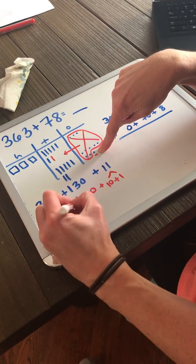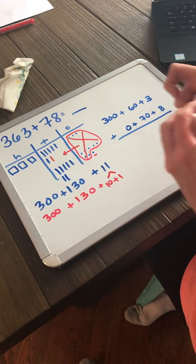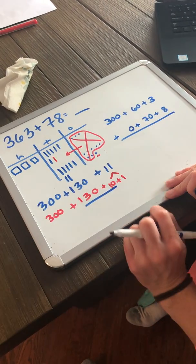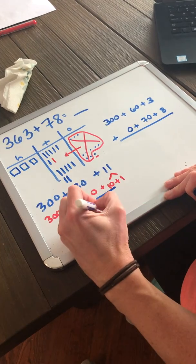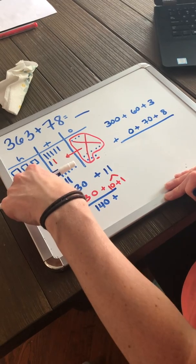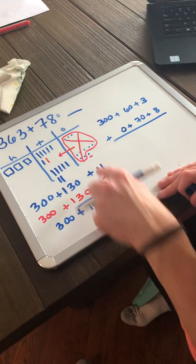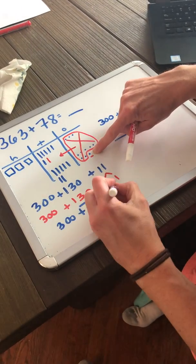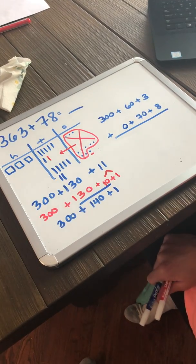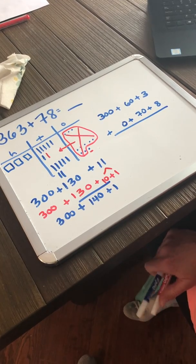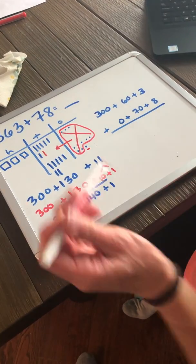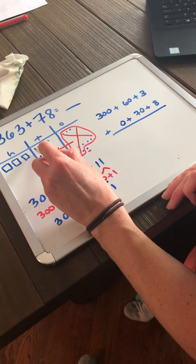So now I do not have 130. I added 10 more. So 130 plus 10 more is now 140. I still have 300s. Nothing's changed yet there. And I only have one 1. So now let's look at our 10s. We have way too many 10s. Anytime you have 10 or more of the same thing, we can regroup and bundle and exchange.